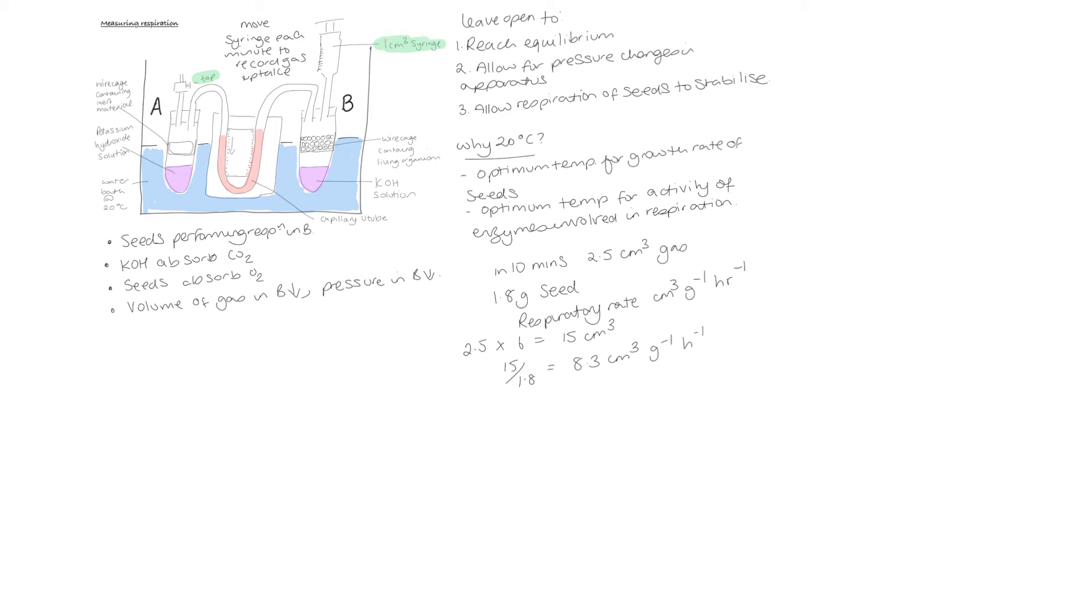We can use machines like this to measure something called the RQ value. RQ stands for the respiratory quotient. This equation is RQ equals volume of carbon dioxide given off divided by volume of oxygen taken in. So if we just remove the potassium hydroxide solution that absorbed the carbon dioxide given off, we would then be able to calculate an RQ value. So what we know is that different substrates give different RQ values. So if an organism is respiring carbohydrates, it has an RQ value of 1. That means that every molecule of carbon dioxide given off, it takes in one molecule of oxygen. For protein, it's about 0.9. And for fat, it's about 0.7.